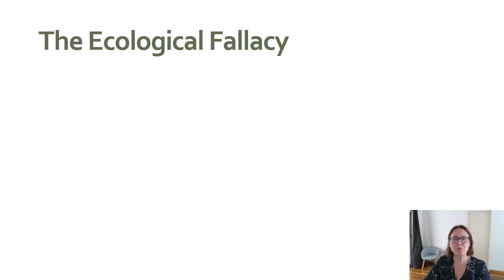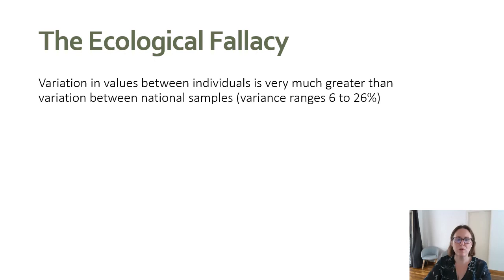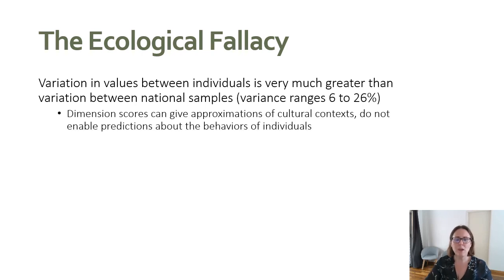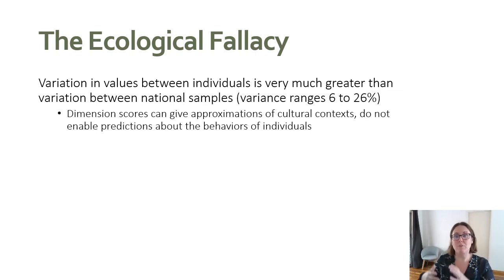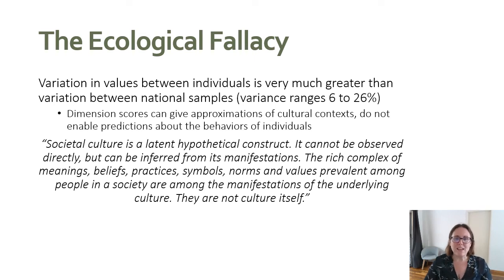Getting back to the distinction between collective and personal values — this is a really important issue in cross-cultural psychology called ecological fallacy. Ecological fallacy says that variation in values between individuals within a society is much greater than variation between national samples. People tend to vary a lot more within the group than cultures do vary amongst themselves. The dimension scores — whether Schwartz, Hofstede, or any other value dimensions — can give us approximations of cultural context, but they don't enable predictions about the behaviors of specific individuals.